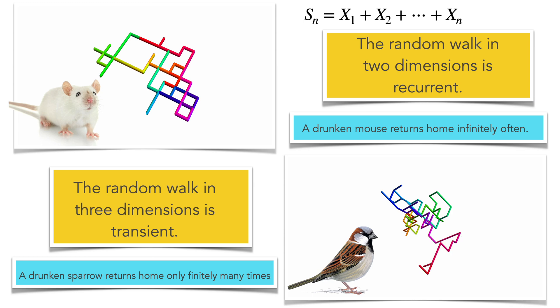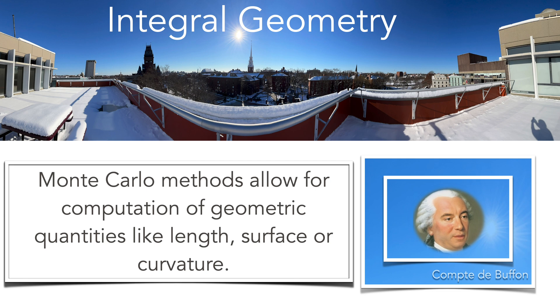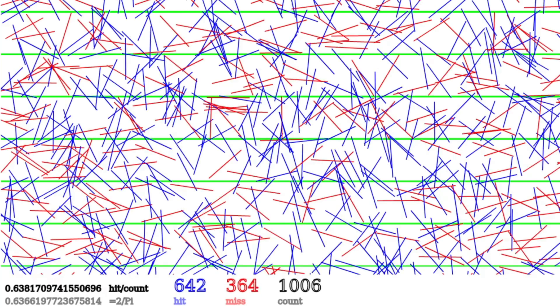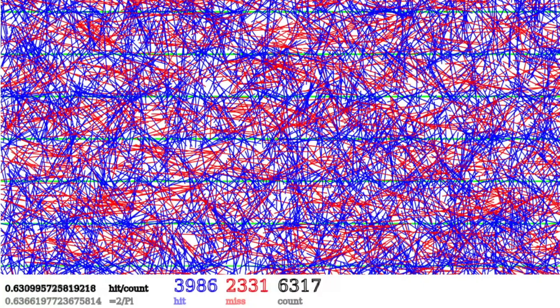A drunken sparrow will return only finitely many times and then escape to infinity. We can probe the length of a curve or curvature or other geometric quantities using random processes. For example, you can evaluate lengths by throwing random lines on an object and counting how many times it hits. This is the Buffon needle problem. I programmed that six or seven years ago in JavaScript. You count how many times you hit the grid, and the fraction of hits over count converges to two over pi.